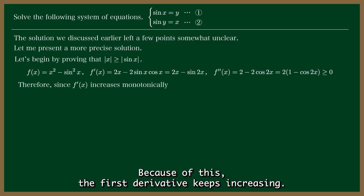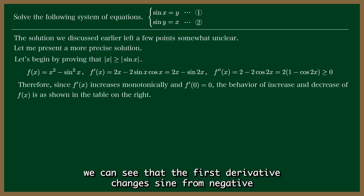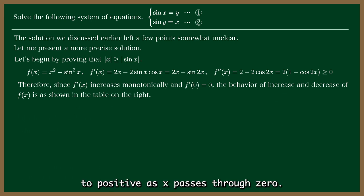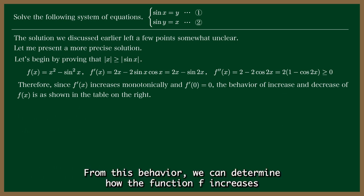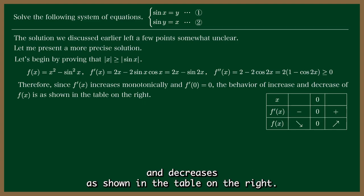Because of this, the first derivative keeps increasing. And since the first derivative is 0 at x equal to 0, we can see that the first derivative changes sign from negative to positive as x passes through 0. From this behavior, we can determine how the function f increases and decreases, as shown in the table on the right.